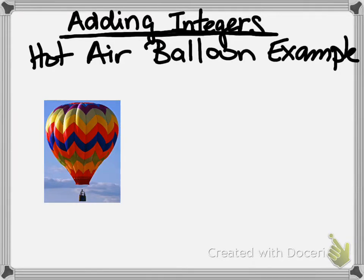This is our adding integers hot air balloon example. So for this example, we've got two different things that we are thinking about. We can think about maybe adding some balloons on top of the balloon, like that, or we could add weights to the bottom. I guess I should put it on the basket down here. We'd attach weights to the bottom.